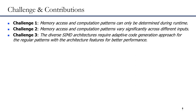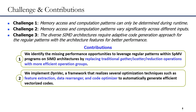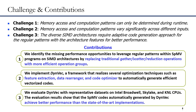Therefore, we make three key contributions to address the above challenges. We first identify the missing performance opportunities to leverage regular patterns within SPMV programs on SIMD architectures by replacing traditional gather, scatter, and reduction operations with more efficient operation groups. Then, we implement DEMV, a framework that applies several optimization techniques such as feature extraction, data re-arranger, and code optimization to automatically generate efficient vectorized codes. Finally, we evaluate DEMV with representative datasets on Intel Broadwell, Skylake, and KNL platforms. The evaluation results show that the SPMV codes generated by DEMV achieve better performance than state-of-the-art implementations.